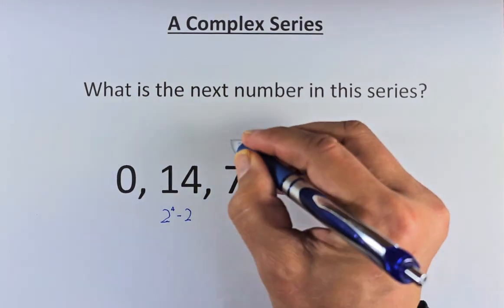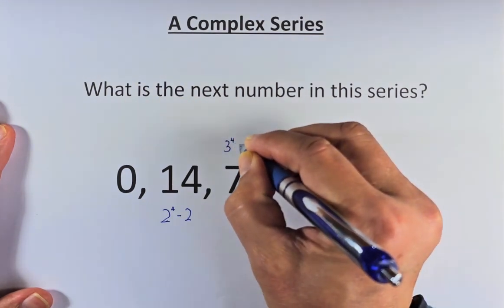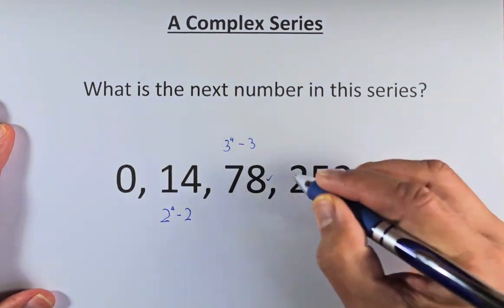So 78 is going to increase by 1. So it's going to be 3 to the power of 4 minus 3. 3 to the power of 4 is 81. 81 minus 3, that gives us 78.